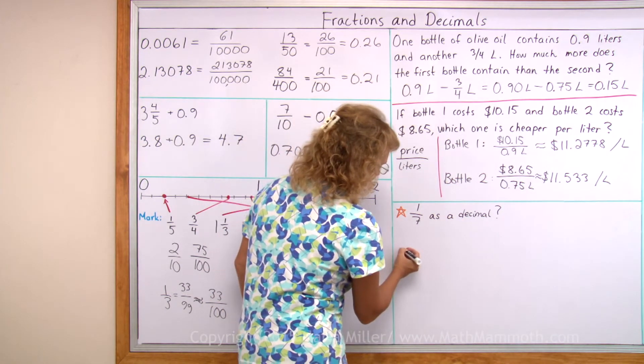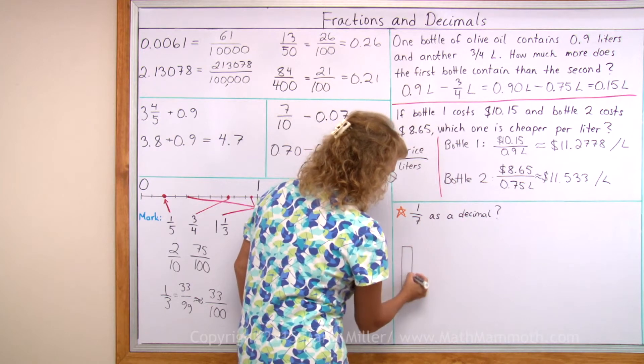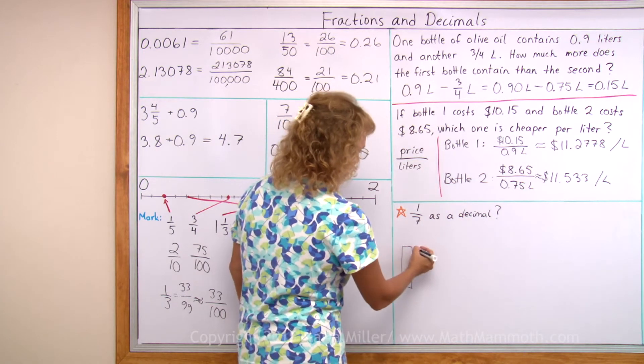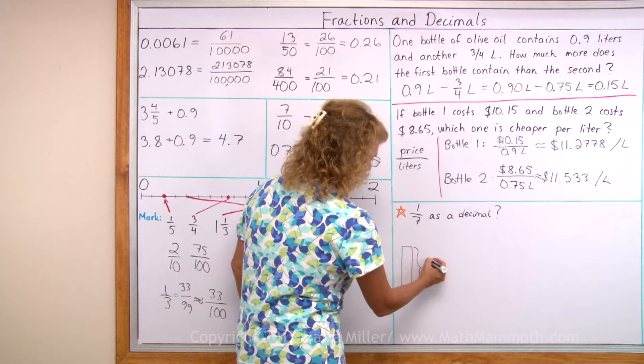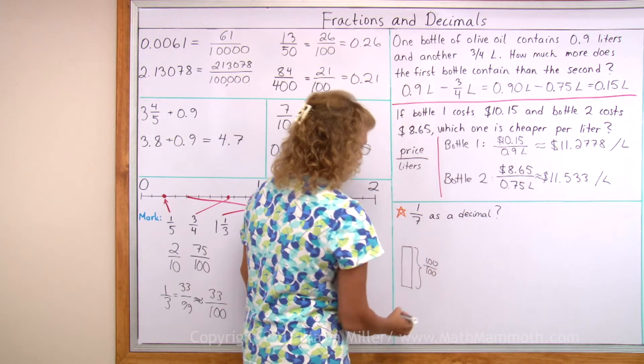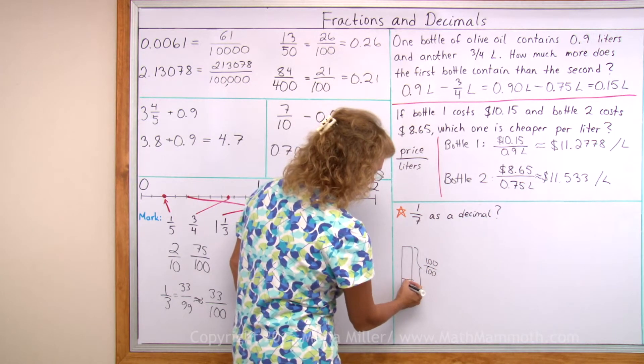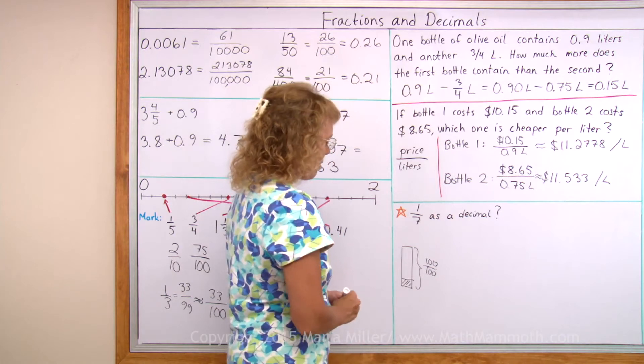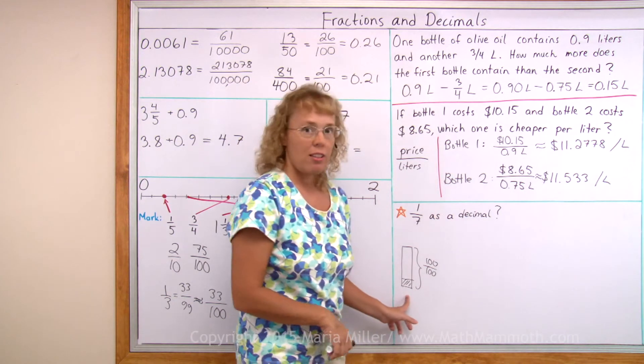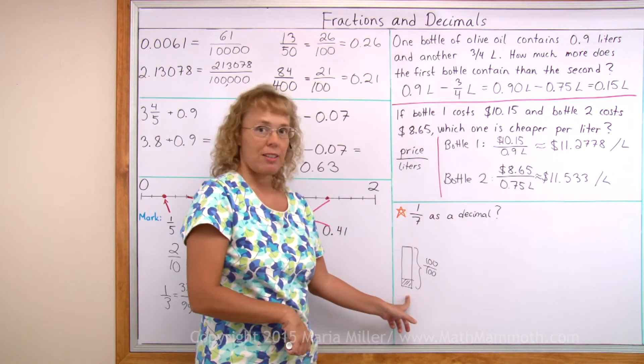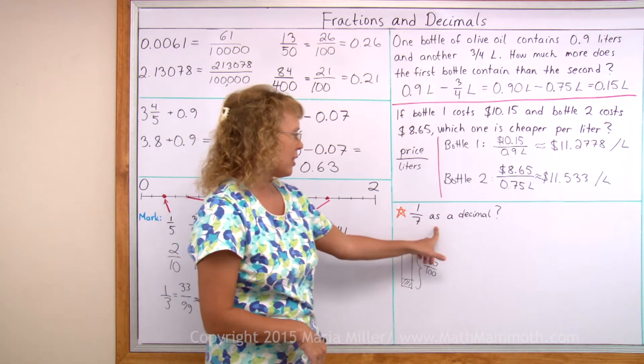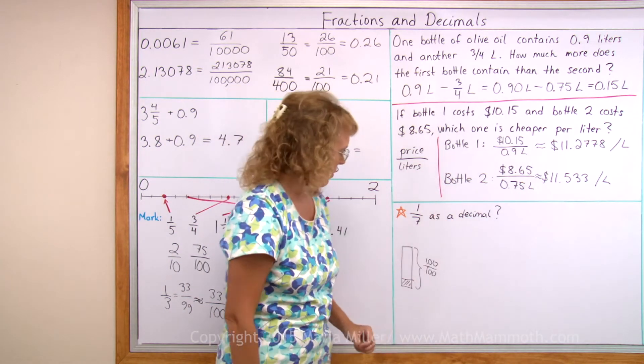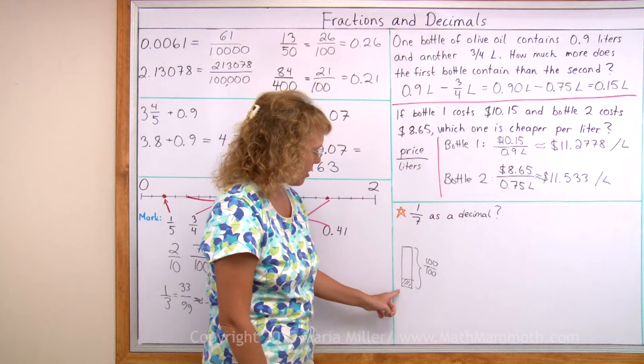This one, think of it this way first. If this is one whole, this is one. Or it's hundred hundredths, or one. And one seventh is this much, you know? One seventh part. So how many hundredths is one seventh? If I wanted to write this as a decimal as so many hundredths, then I could take hundred divided by seven.